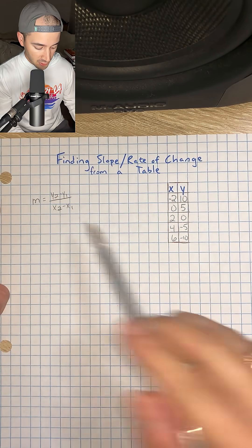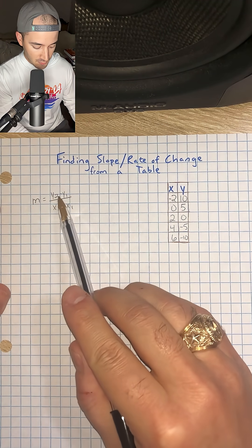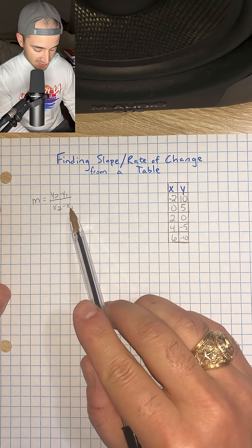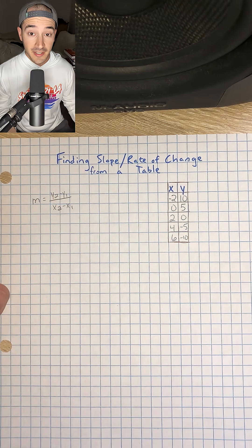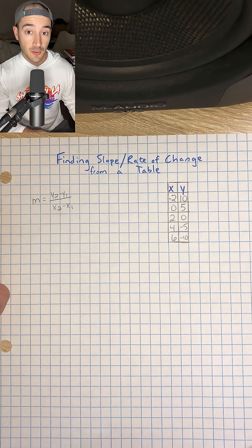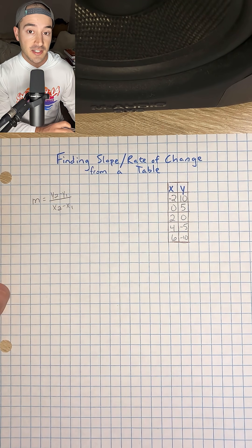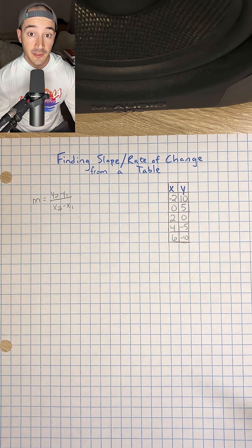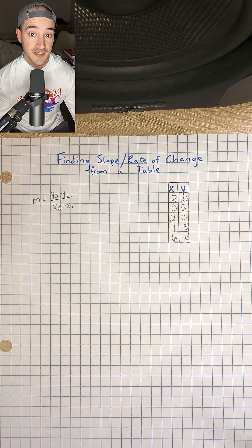Okay, so we've learned that slope is y2 minus y1 over x2 minus x1. Meaning that we're just looking for the change in the y value over the change in the x value. So sometimes in problems they'll say rate of change, sometimes they'll say slope.